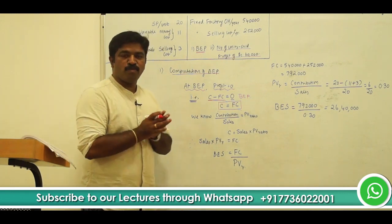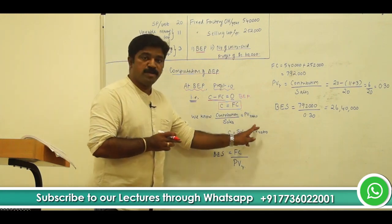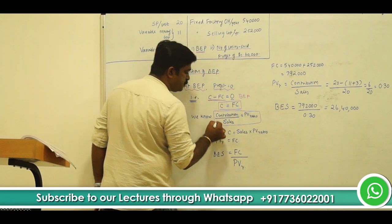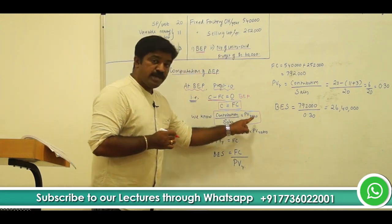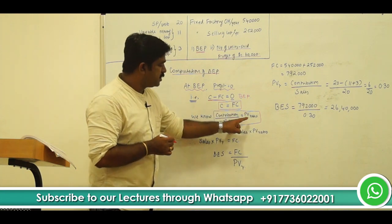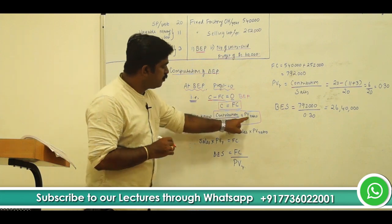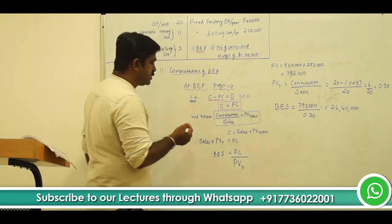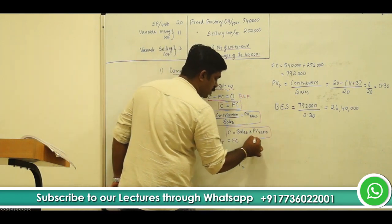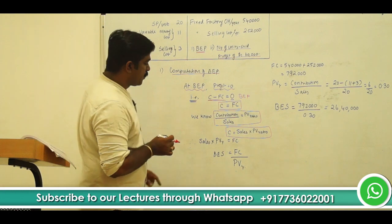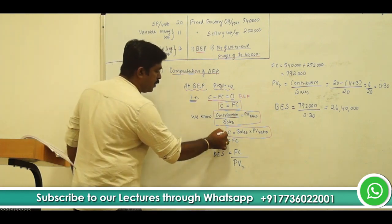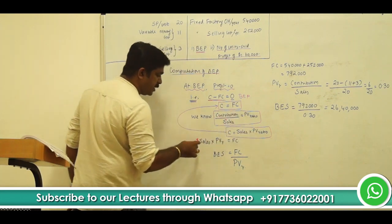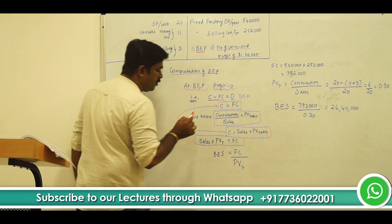At this juncture, let us apply one understanding we have. We know what is PV ratio. PV ratio is contribution divided by sales. I can also rewrite this as: contribution is equal to PV ratio multiplied by sales. Both are one and the same. So, if I replace C with sales into PV ratio in the equation C equals FC, what I get is: sales multiplied by PV ratio is equal to fixed cost.